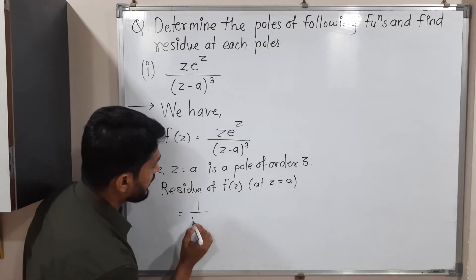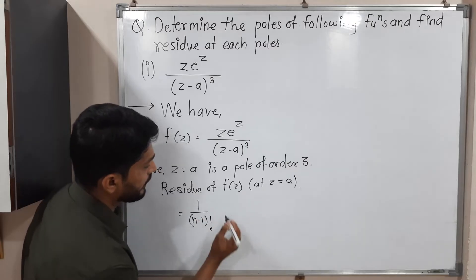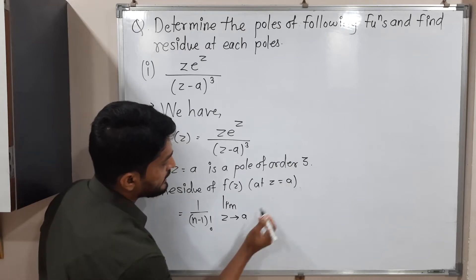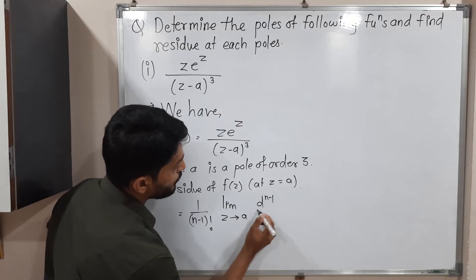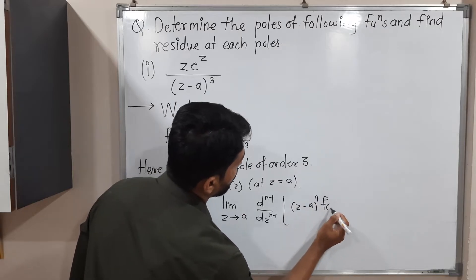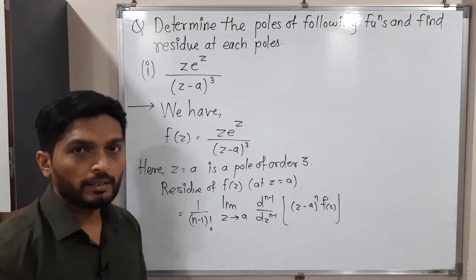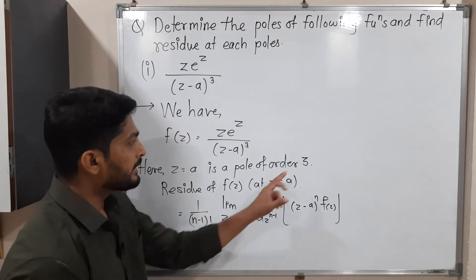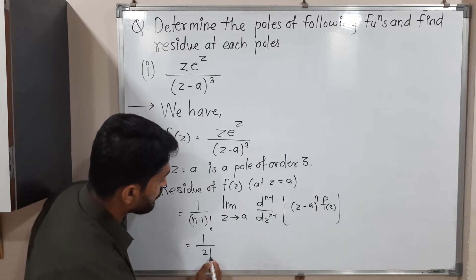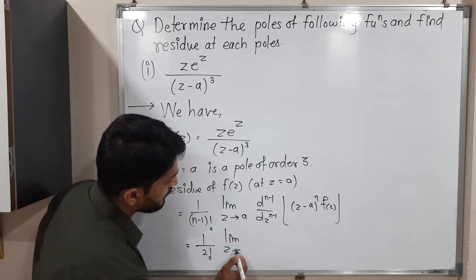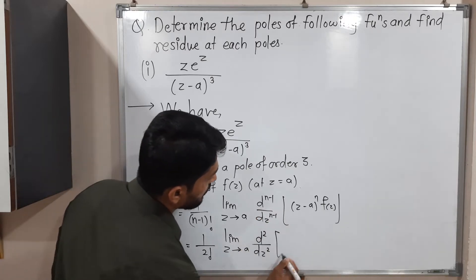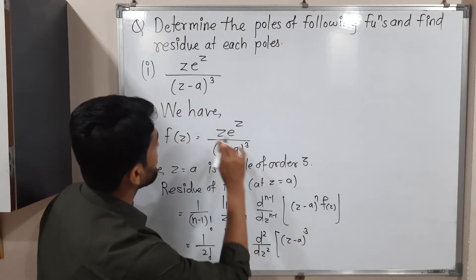Here order is 3, which is greater than 1, so I will use the second formula. The formula is: 1 upon (n minus 1) factorial, limit z tends to z0, (n minus 1)th derivative of (z minus z0)^n times f(z). Our n is 3. So we get 1 over 2 factorial, limit z tends to a, second derivative of (z minus a)^3 times f(z), where f(z) is z·e^z over (z minus a)^3.